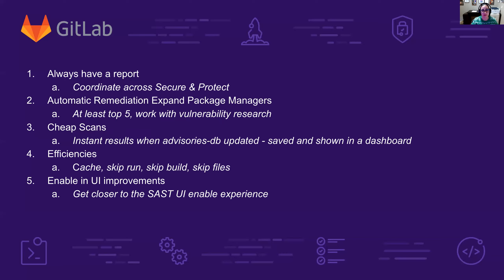I would love us to always have a report — whether we succeeded or failed — with a little bit of information in there. We need to coordinate this across all of secure and protect. I would like automatic remediation to expand to at least the top five package managers and languages within GitLab, because right now it's a very limited set. Once we've got the bot out, the obvious next step is people saying the bot doesn't work for my language, so let's aim for at least the top five. Plus, if the GitLab tools are not in the top five, let's do those anyway — dogfooding.